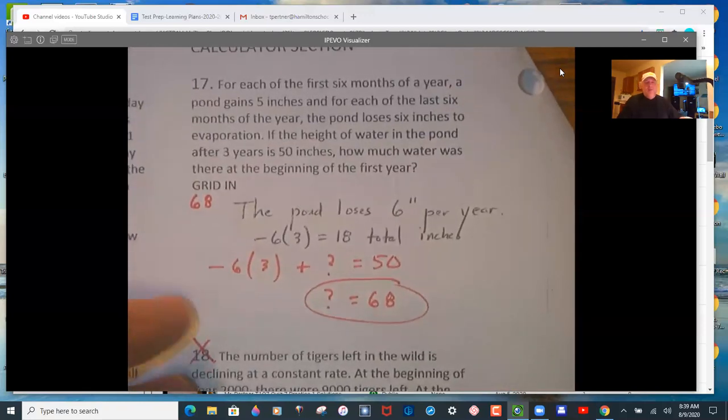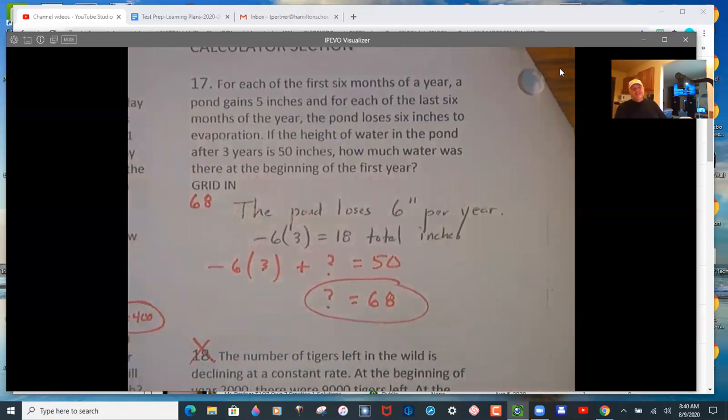This is always argumentative in the class. The interpretation I want you to have, the pond loses 6 inches per year. So over 3 years, it's 18 total inches that are lost. So negative 18 plus something equals 50. There was 68 at the beginning of the first year. That's the interpretation that we need. A little bit goofy.